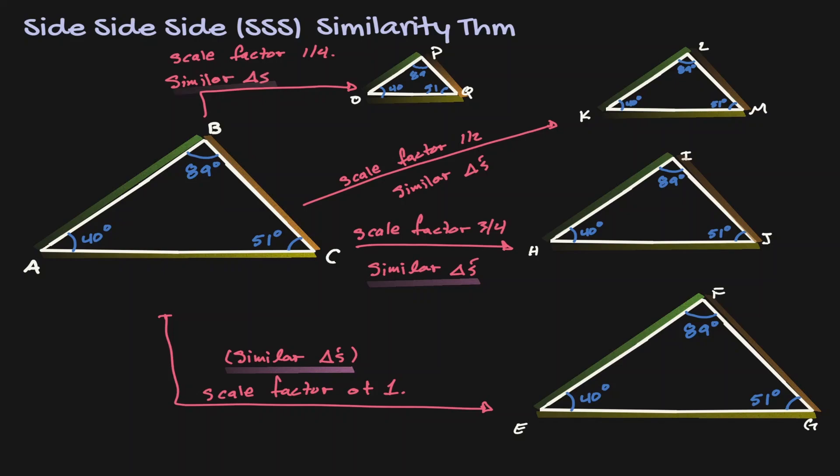And this is the idea behind the side-side-side similarity theorem. Given any two triangles, if you are able to show that all sides are proportional to each other, then the interior angles will never change in measurement. Therefore, you can claim that you have two similar triangles.